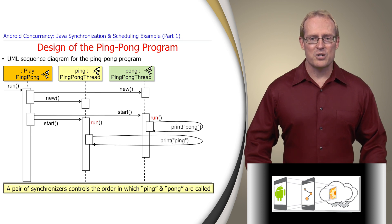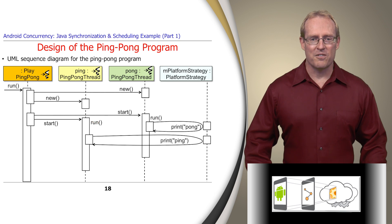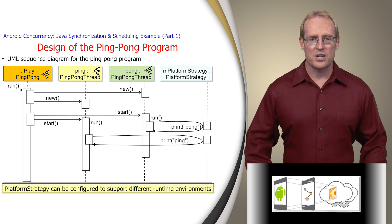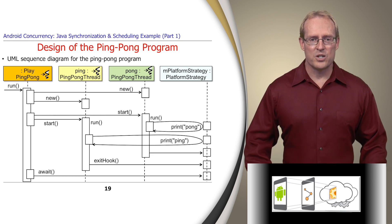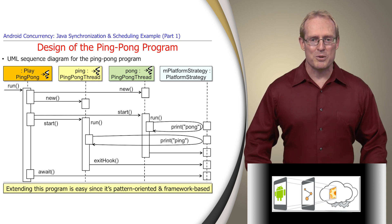These synchronizers control the order in which the threads alternate printing ping and pong via the configured platform strategy, which factors out all the platform-dependent output and synchronization operations, so the PlayPingPong code will execute without change in multiple runtime environments. It also contains a countdown latch that's used to wait for the two ping pong threads to exit. Extending this program is relatively straightforward, since it's based on a framework whose design is guided by several Gang of Four patterns.